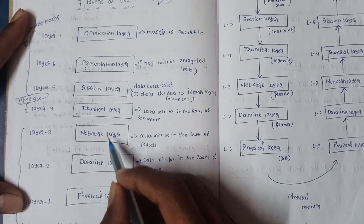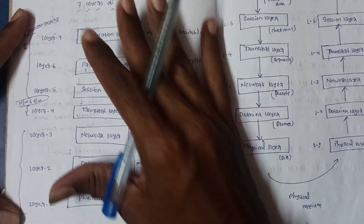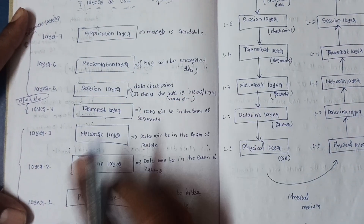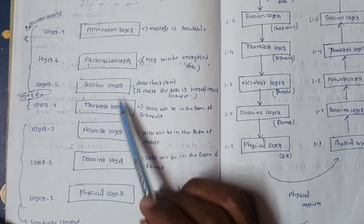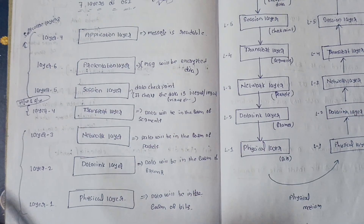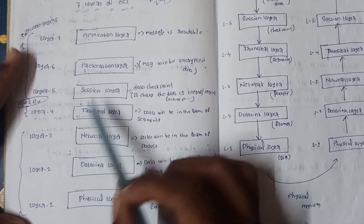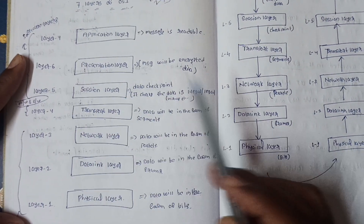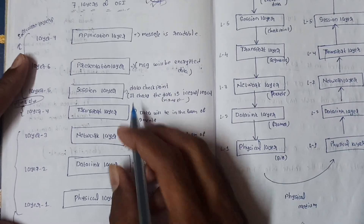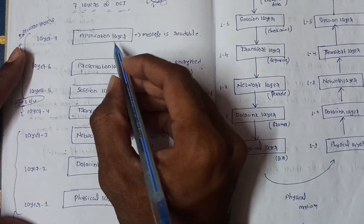The seven layers are: Physical Layer, Data Link Layer, Network Layer, Transport Layer, Session Layer, Presentation Layer, and Application Layer. These are listed from layer one (Physical) up to layer seven (Application).